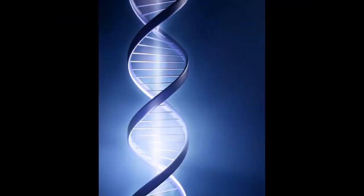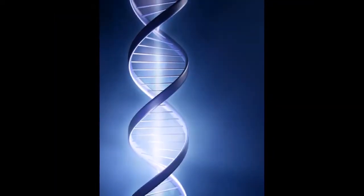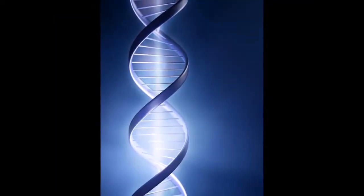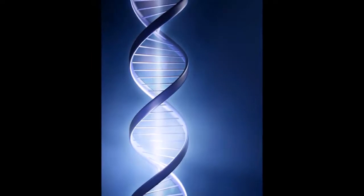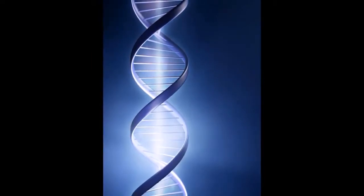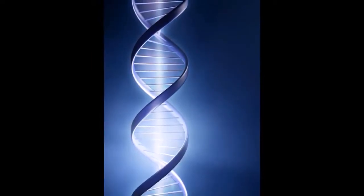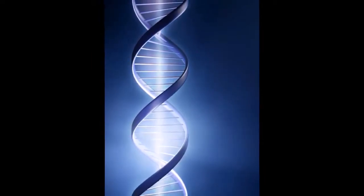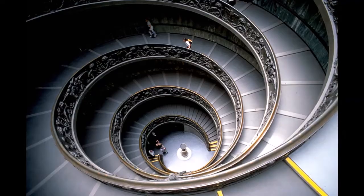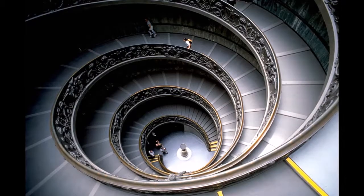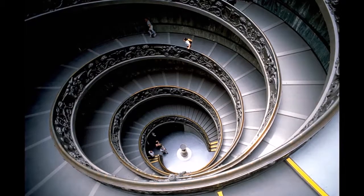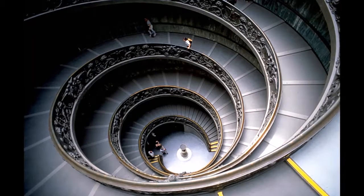A helix is a type of smooth space curve, that is, a curve in three dimensional space. It has the property that the tangent line at any point makes a constant angle with a fixed line called the axis.